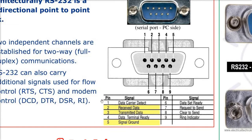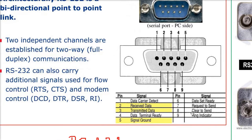RTS stands for Request to Send, CTS is for Clear to Send, and these are for flow control. Then we have the modem control pins: DCD, DTR, DSR, and RI. The most important part is received data, transmitted data, and the signal ground.